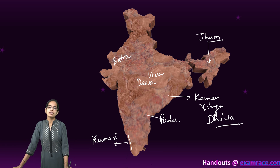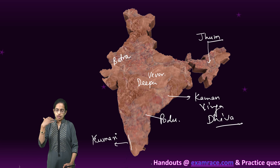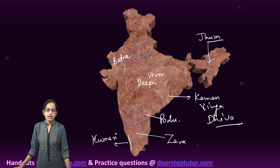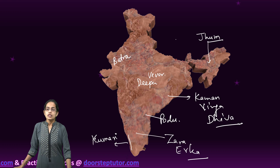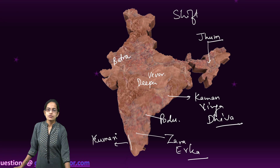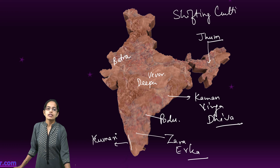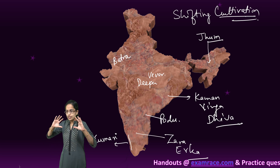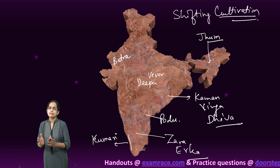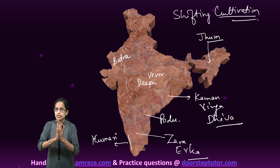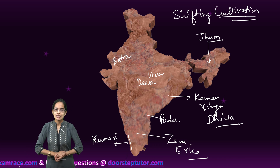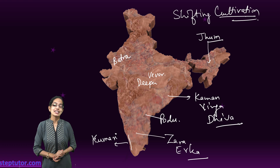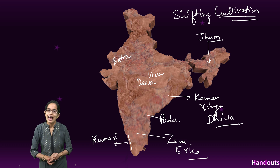In Odisha it is known by different names like kaman, vinga, or devi. In certain states it is also known as zara or erka. Different tribes have their own local names as well. This was an introduction to shifting cultivation — one of the most primitive ways of cultivation, mainly followed by tribal populations in India and worldwide. Stay tuned for many more interesting lectures related to agriculture. Have a wonderful day!